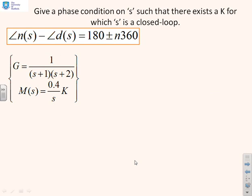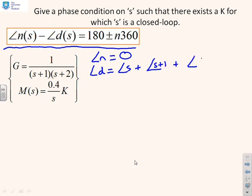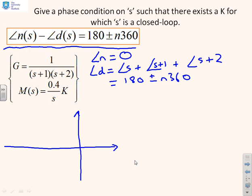Here's an example: Give a phase condition on s such that there exists a K for which s is a closed loop pole. First of all we've restated the requirement, so we don't need to redo it. Here I've got the argument of n equals 0 because n is just a constant. The argument of d is the argument of s plus the argument of (s plus 1) plus the argument of (s plus 2). I want this to be equal to 180 plus or minus n times 360. Let's do a little sketch. I'm going to mark the pole positions: a pole at 0, a pole at minus 1, and a pole at minus 2.